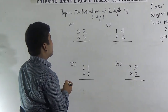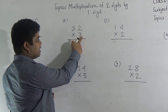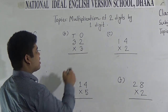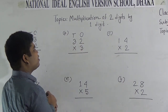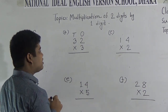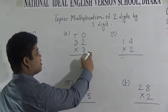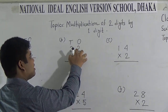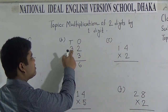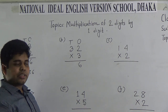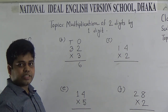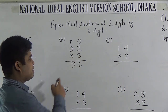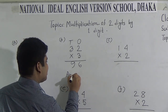Next one: 32 × 3. Here, 2 is in the 1's place and 3 is in the 10's place. At first we multiply 2 by 3, then we multiply 3 by 3. We count the times table of 3: 3 1's are 3 and 3 2's are 6. 6 is placed in the 1's place. Now, we multiply 3 by 3: 3 1's are 3, 3 2's are 6, and 3 3's are 9. So, by multiplying 32 by 3, we get 96. 96 is the answer.